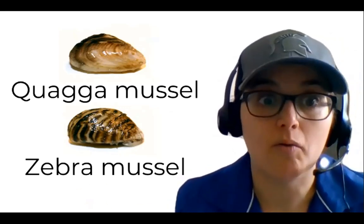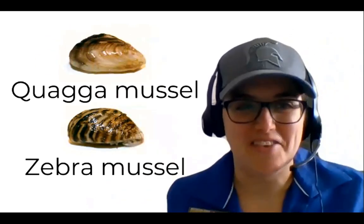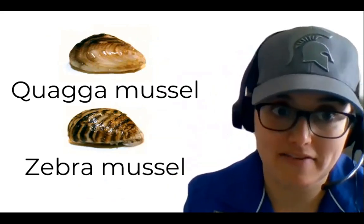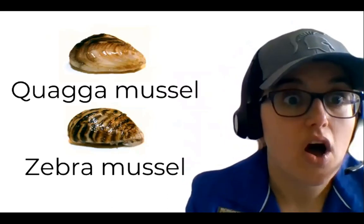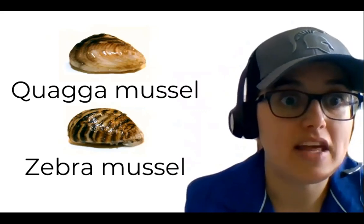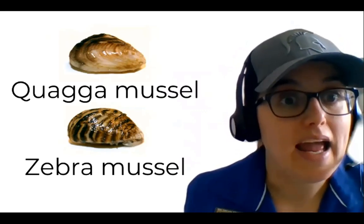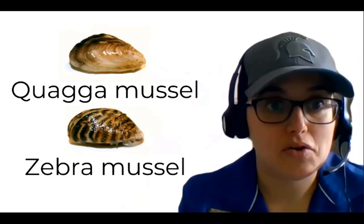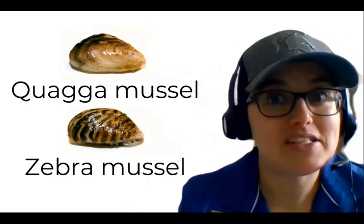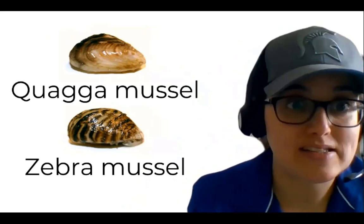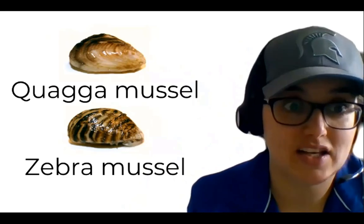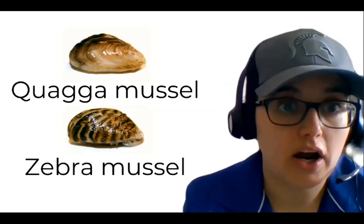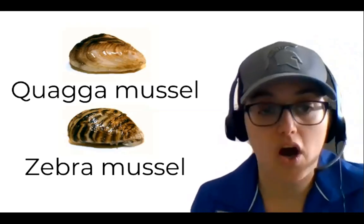Salt water causes boats to be more buoyant, so vessels on the ocean add water as weight. When those vessels reach the Great Lakes, they're no longer in salt water, and keeping that added water weight can cause the boat to sink — so they have to release it. Prior to important legislation to manage ballast water, mussels like the quagga and zebra mussels were introduced into the Great Lakes this way. Once established, they've had a really big impact on our food web.